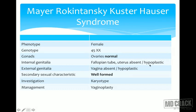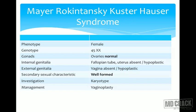In MRKH syndrome: fallopian tubes and uterus are absent or hypoplastic. External genitalia (vagina) are absent or hypoplastic — usually just a blind pouch. Secondary sexual characteristics — breast development, axillary, and pubic hair — are all normal due to intact estrogenic effect. Usual presentation is primary amenorrhea because there is no menstruation. If uterus has any functional tissue, cryptomenorrhea (collection) may occur, but most commonly the uterus is hypoplastic and non-functioning — complete amenorrhea. Karyotype is normal 46,XX. Management: vaginoplasty (McIndoe surgery) enables sexual activity; fertility cannot be restored.